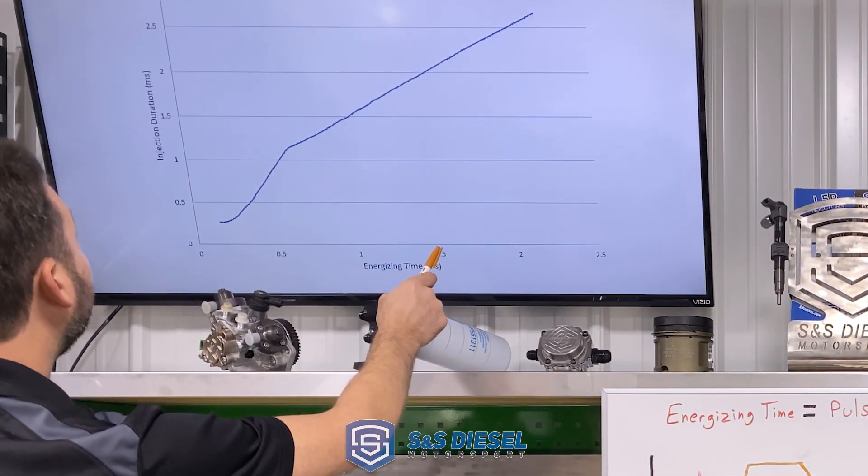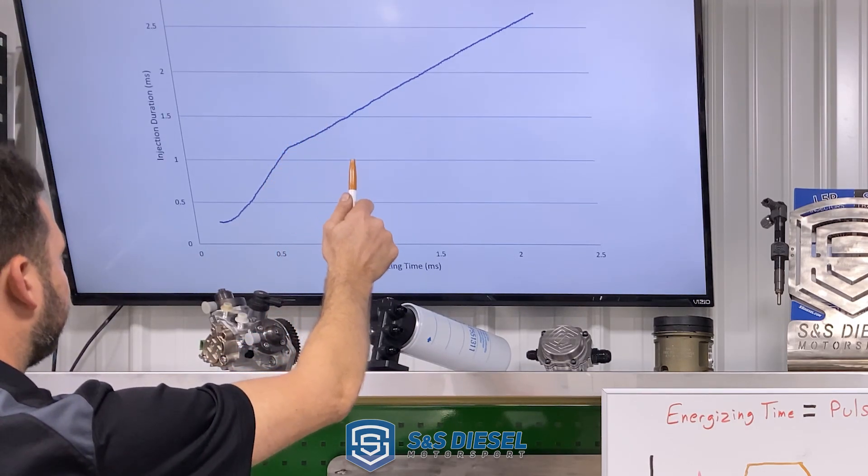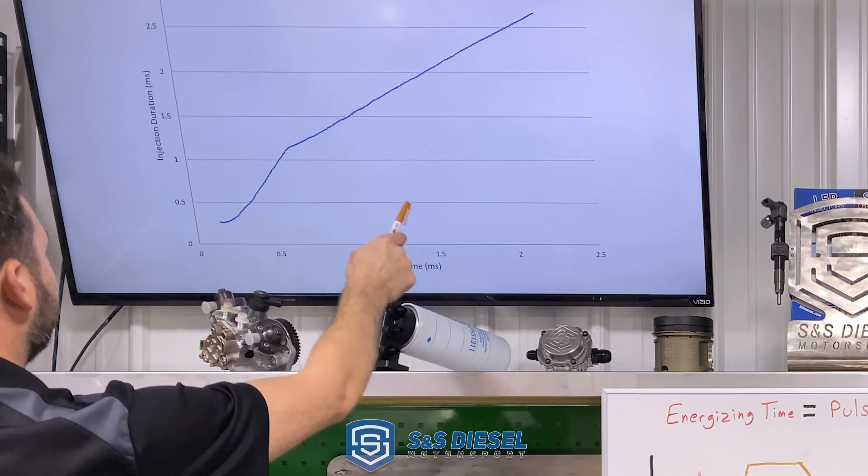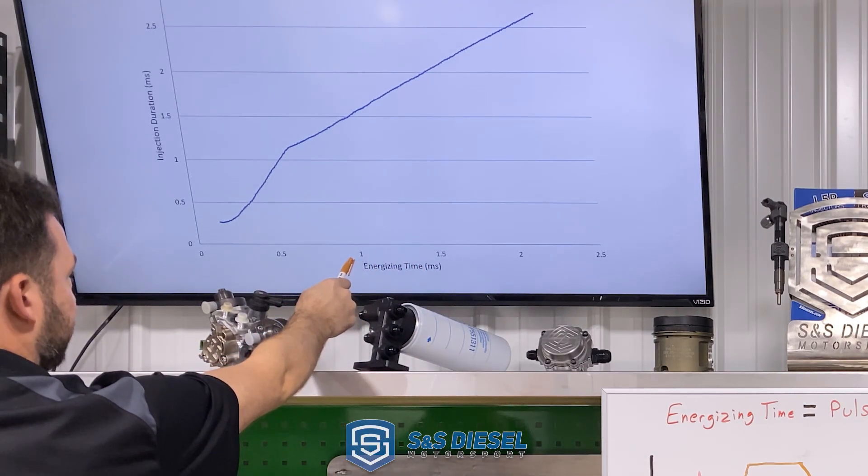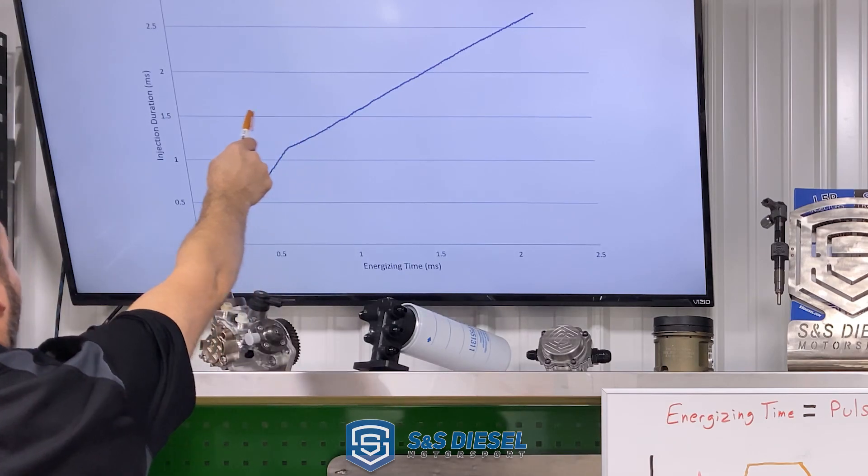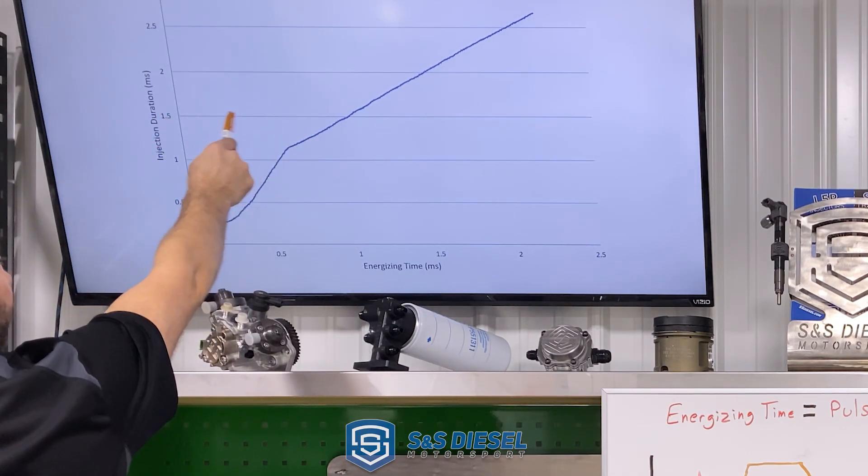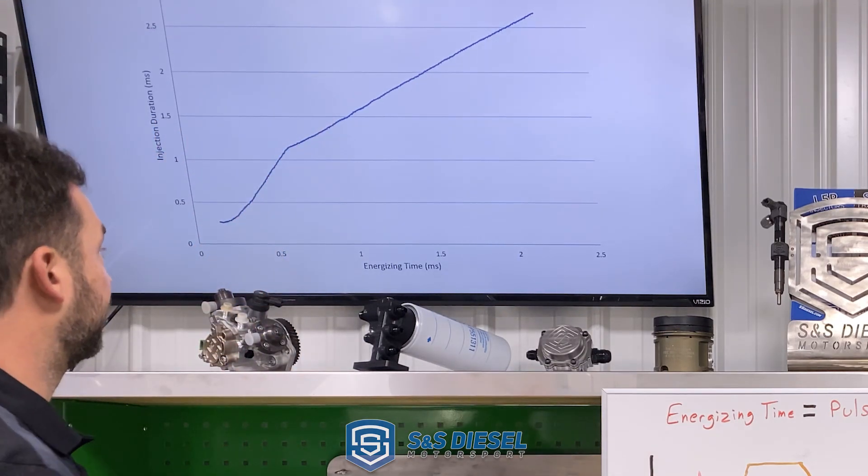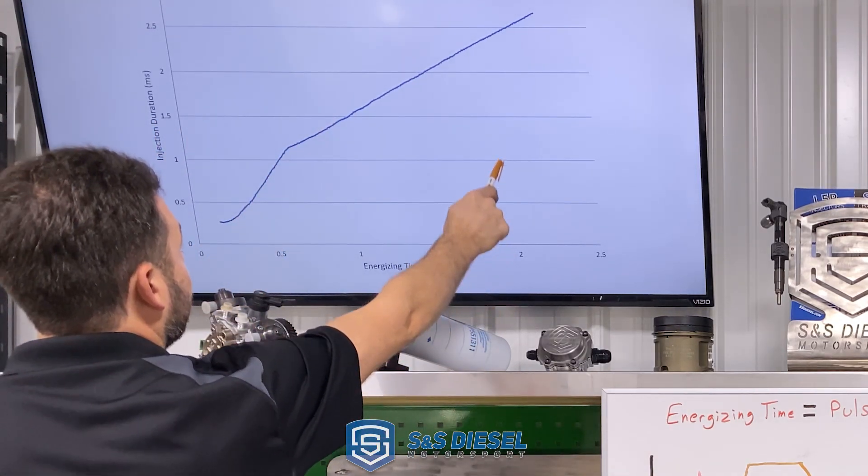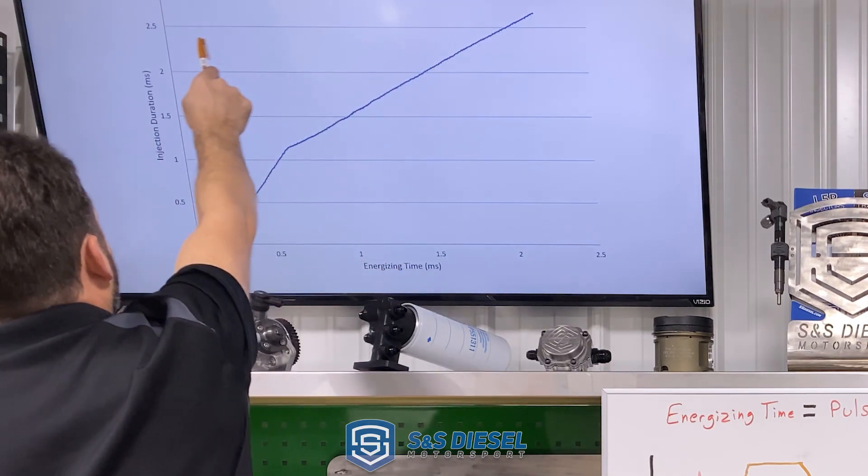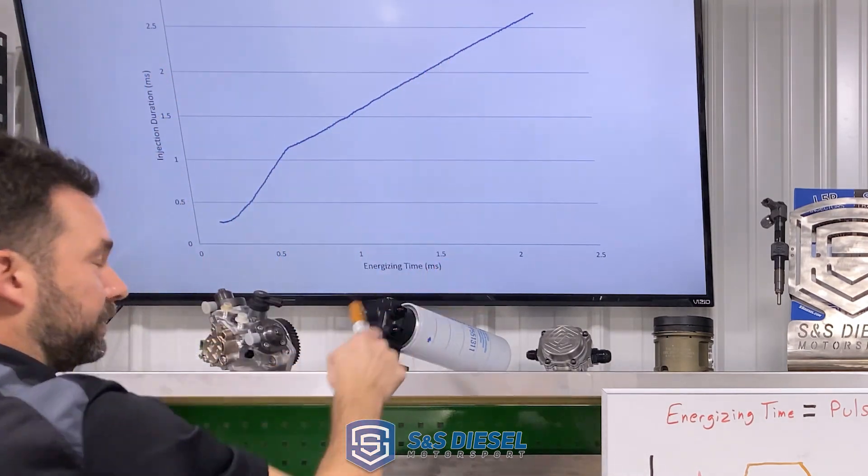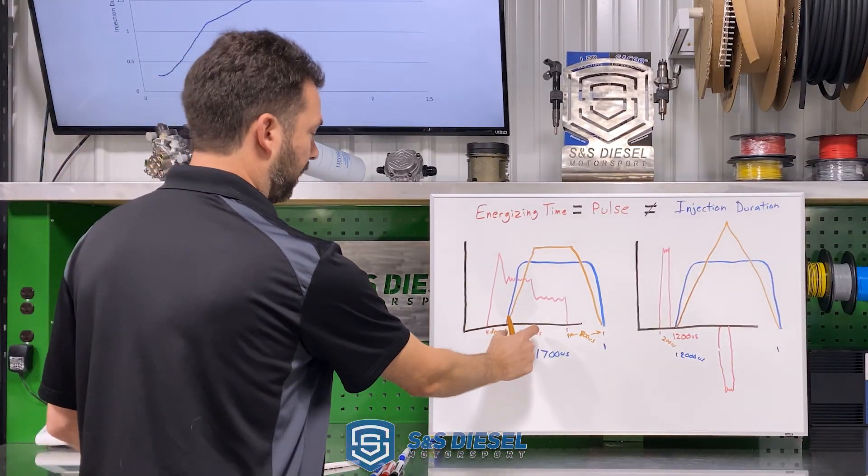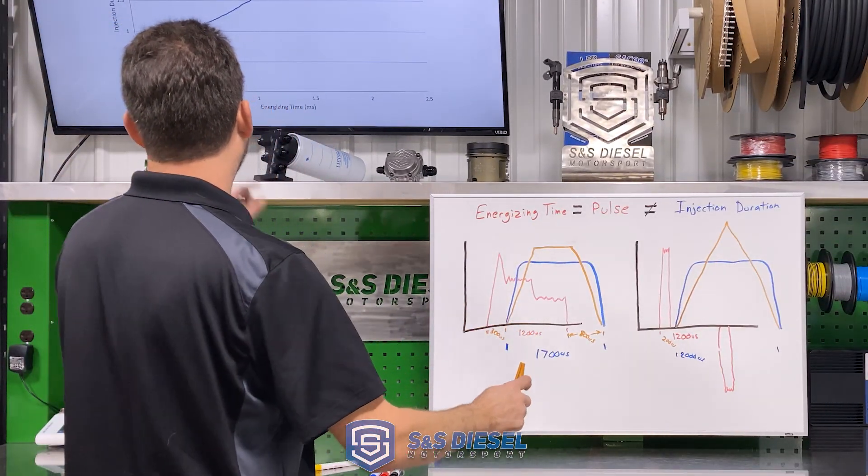Here we have an example of a 6.7 Cummins injector. This would be just a stock injector that we mapped out. You can see that at 1 millisecond or 1,000 microseconds of energizing time, we're at roughly 1,500 microseconds or 1.5 milliseconds of injection duration. And you go out to 2 milliseconds, same thing, we're at 2.5 for our actual duration with a 2 of energizing time. So you can see that our 500 microsecond offset is pretty consistent all the way through there.